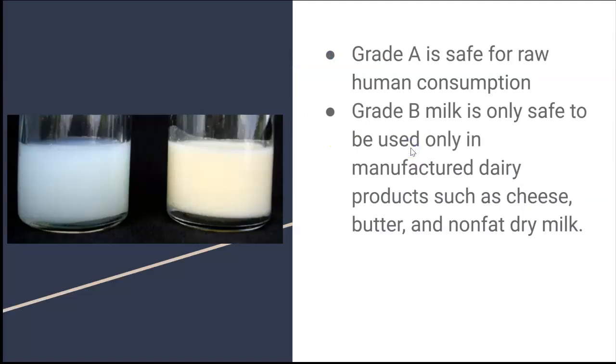The main difference between grade A and B milk is that one is safe for raw human consumption, meaning you can drink it straight out of the carton, while grade B milk is only safe to be used in manufactured dairy products such as cheese, butter, and nonfat dry milk.